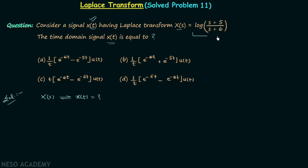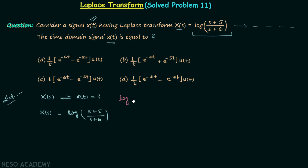We will try to simplify the given Laplace transform into a combination of known Laplace transforms, from which we can easily obtain the corresponding time domain signal. We know X(s) = log[(s+5)/(s+6)], and we can write log(m/n) as log(m) minus log(n). So using this, X(s) = log(s+5) minus log(s+6). In the next step, we differentiate with respect to s one time.